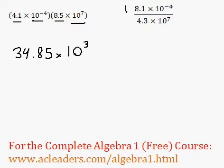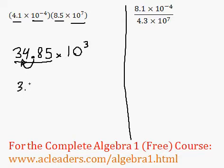Now we're almost done, however, the 34.85 is not in scientific notation. We want to bring the decimal over here. And to do that, we're going to have to multiply it by 10 to the power of 1.